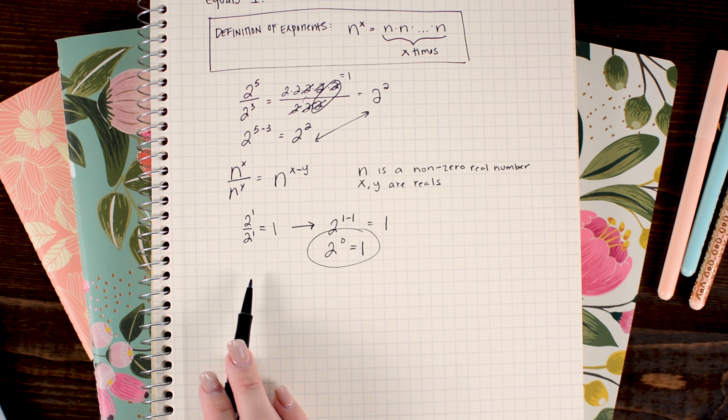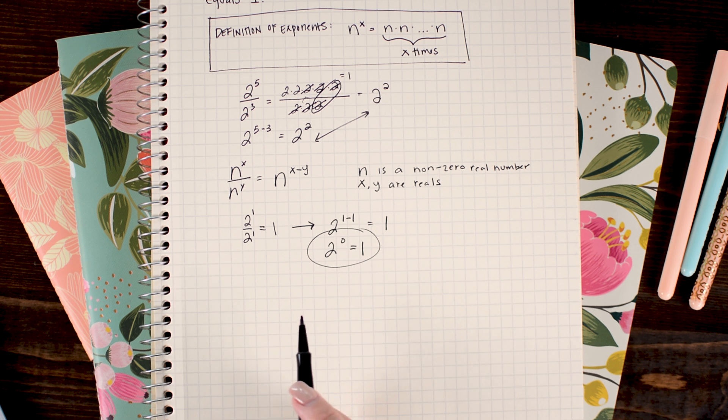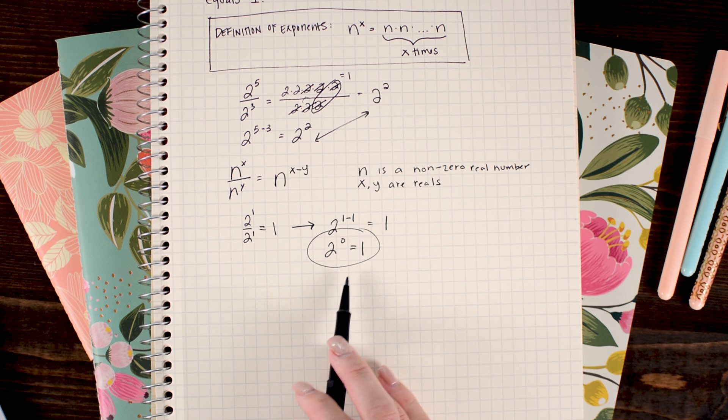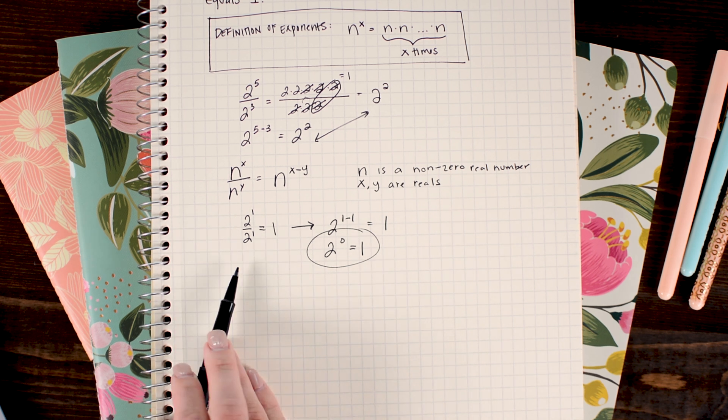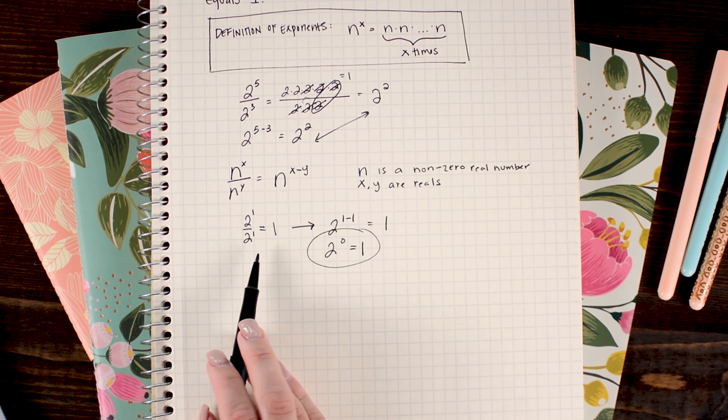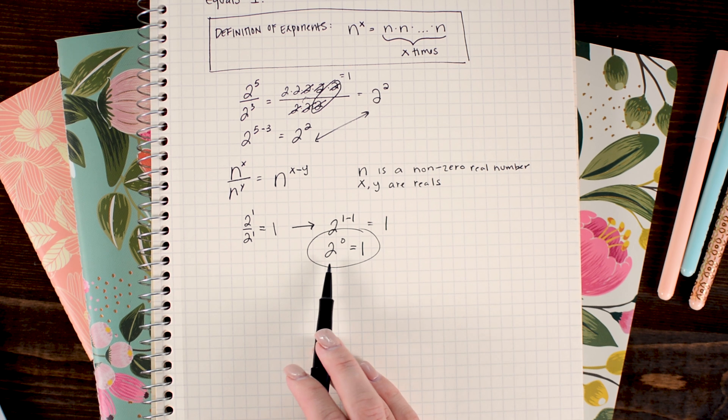We found why 2 to the 0 power equals 1. It came from this subtraction rule with our exponents. So it's that straightforward. This is not a formal proof of it because I can't just choose one number for a formal proof, but this is a good example and gives you a good grasp for why this is true, where that 1 comes from, and why we have this weird result.